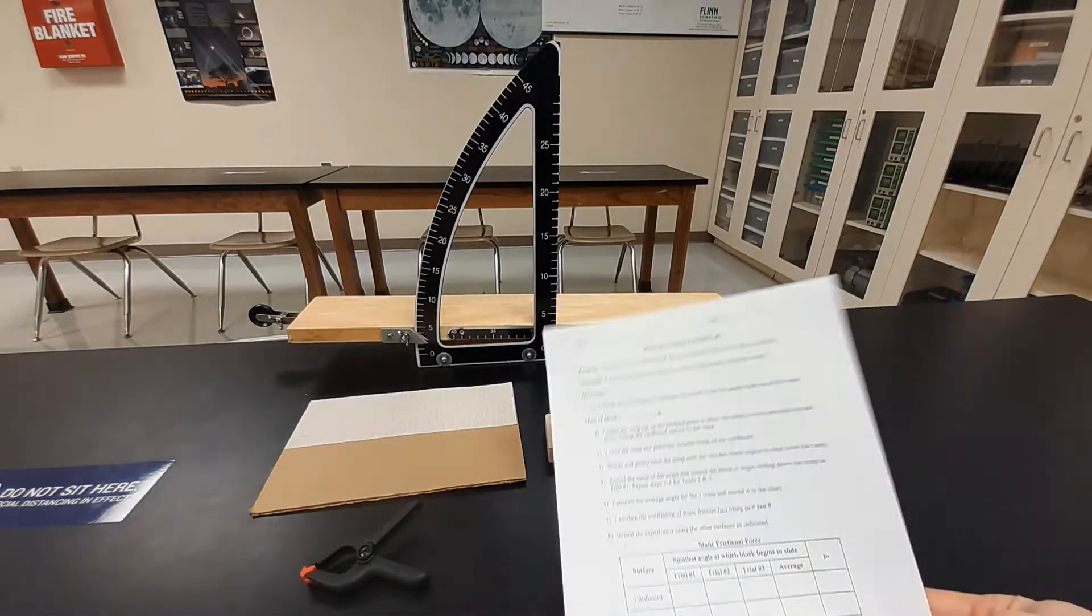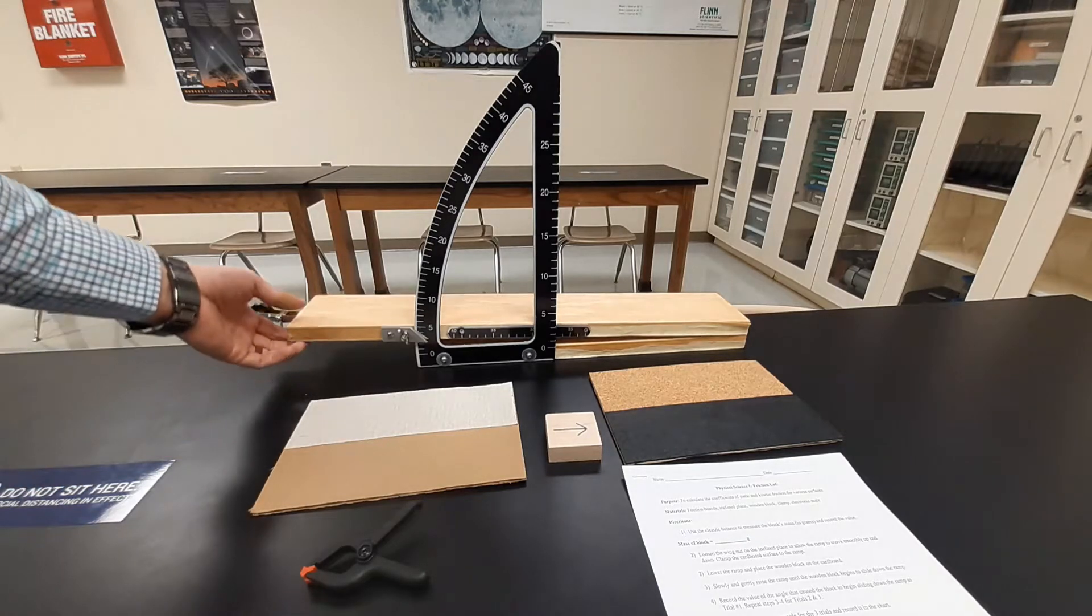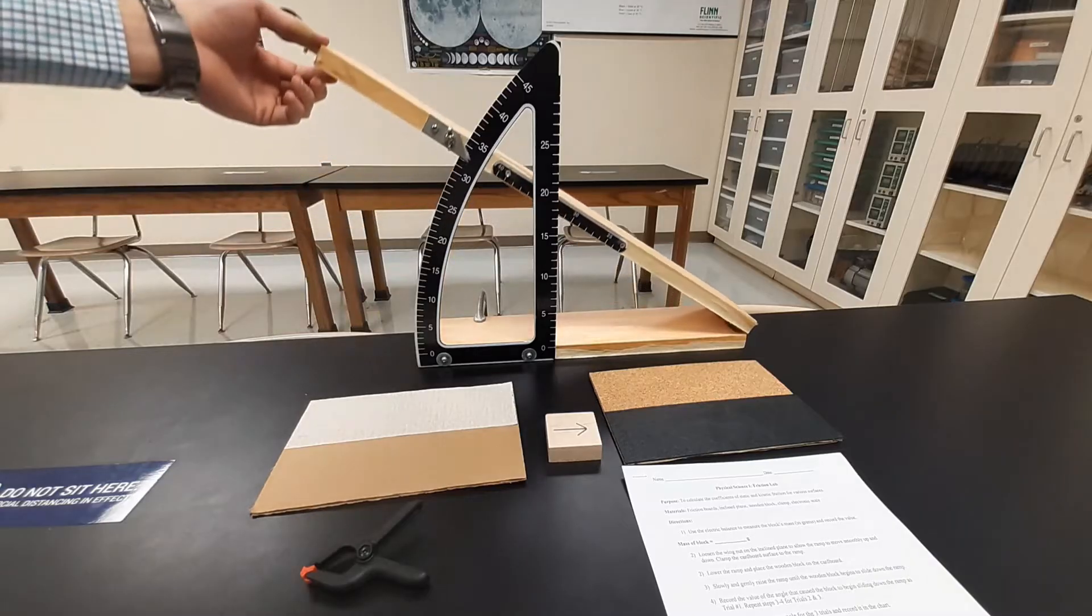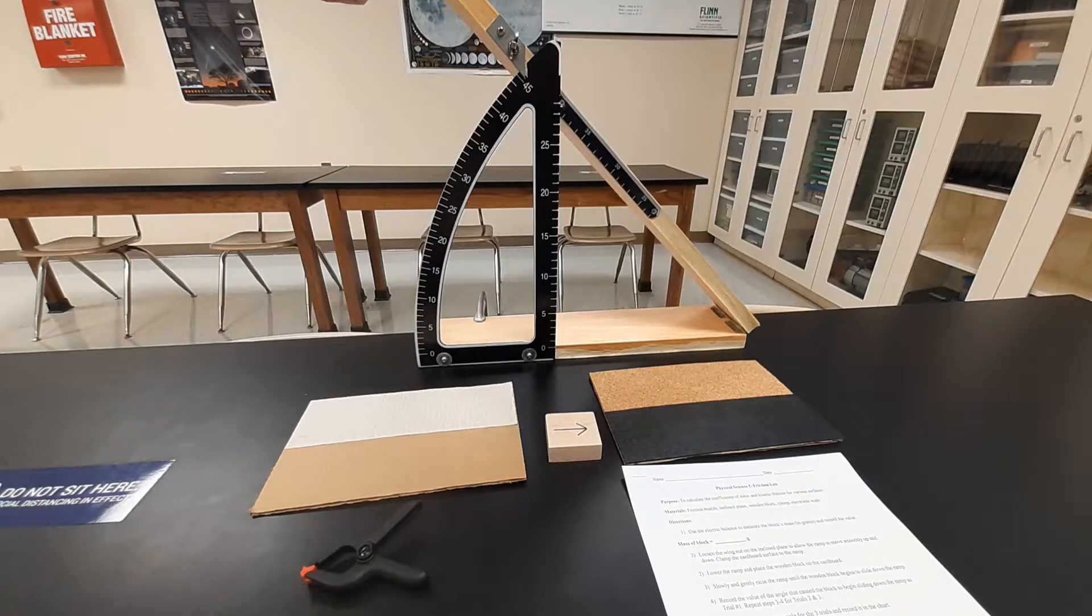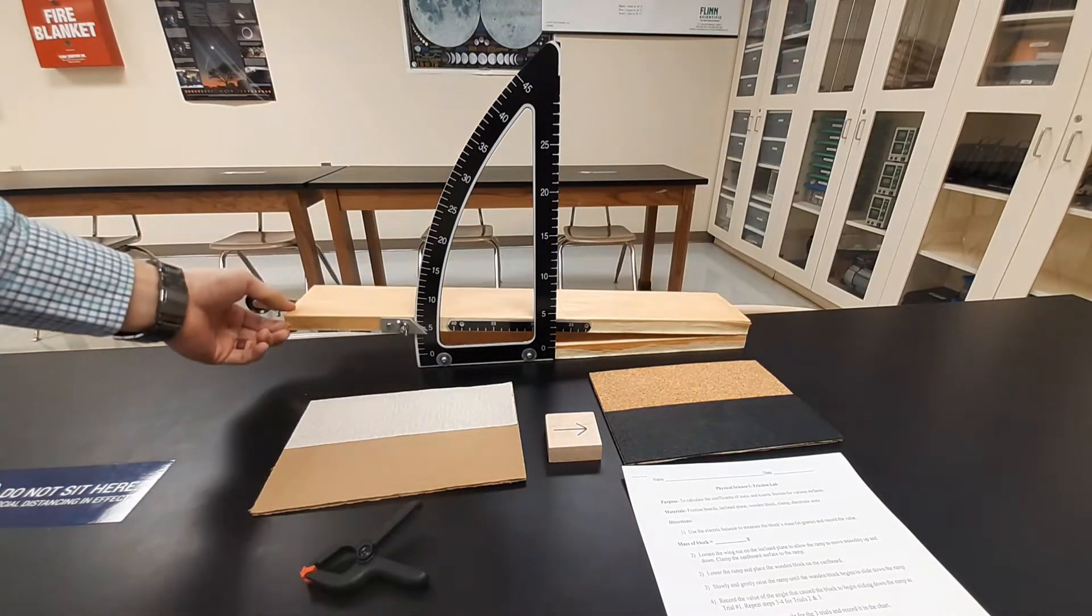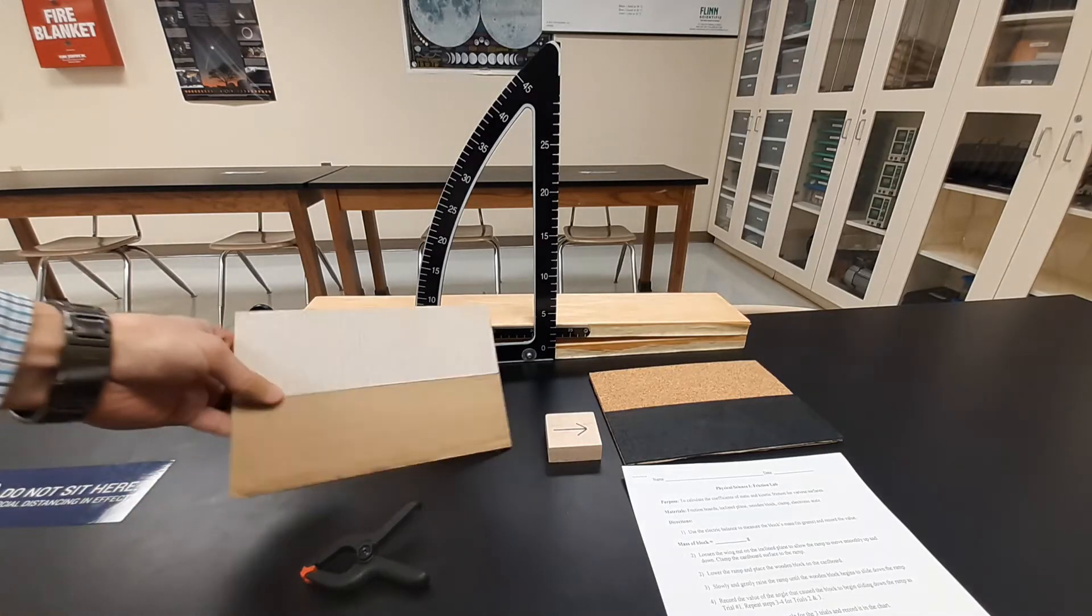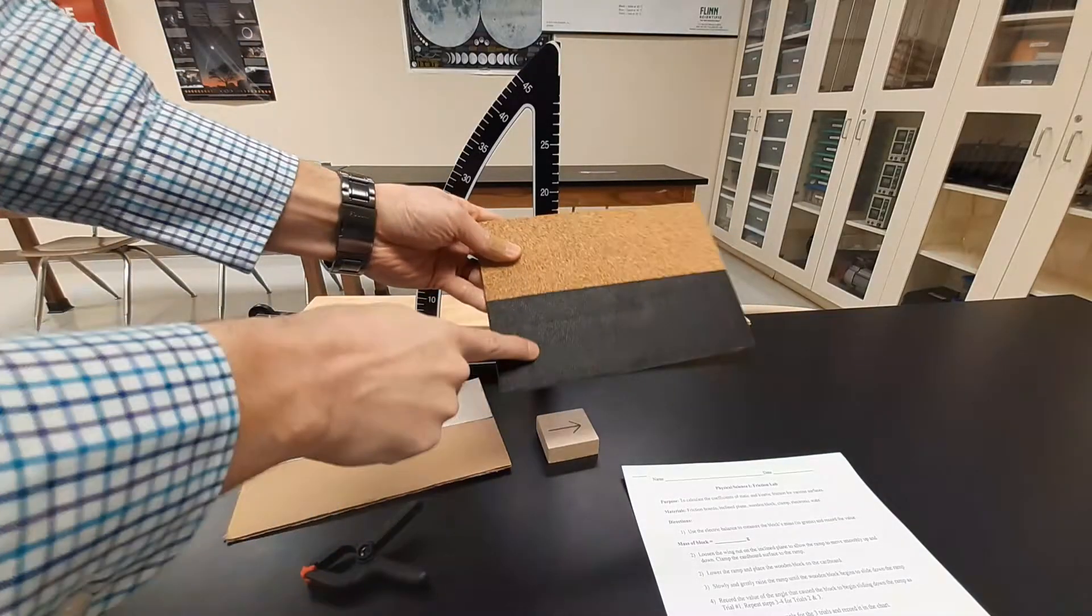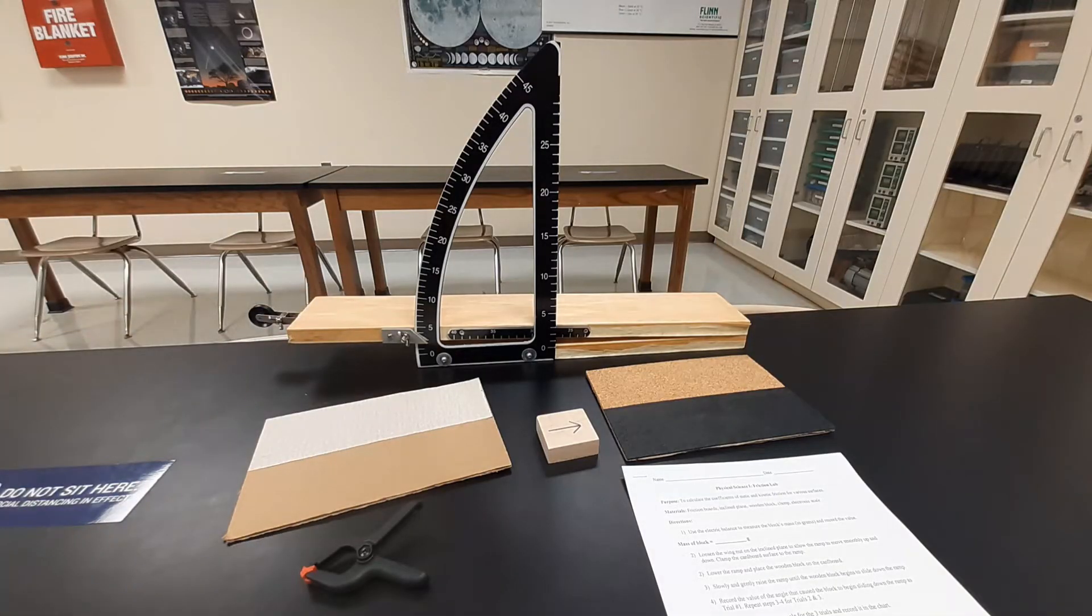So just showing you the setup here. Make sure you go ahead and print out your lab handout if you haven't done it already. We're using this incline plane. I've got it clamped onto the table, but I can raise this ramp, and as we raise it, we can see the angle it's creating here. We're going to be able to use those angles to help us measure the coefficient of friction. We've got some different surfaces: sandpaper, cardboard, rubber, corkboard, and a piece of wood itself.